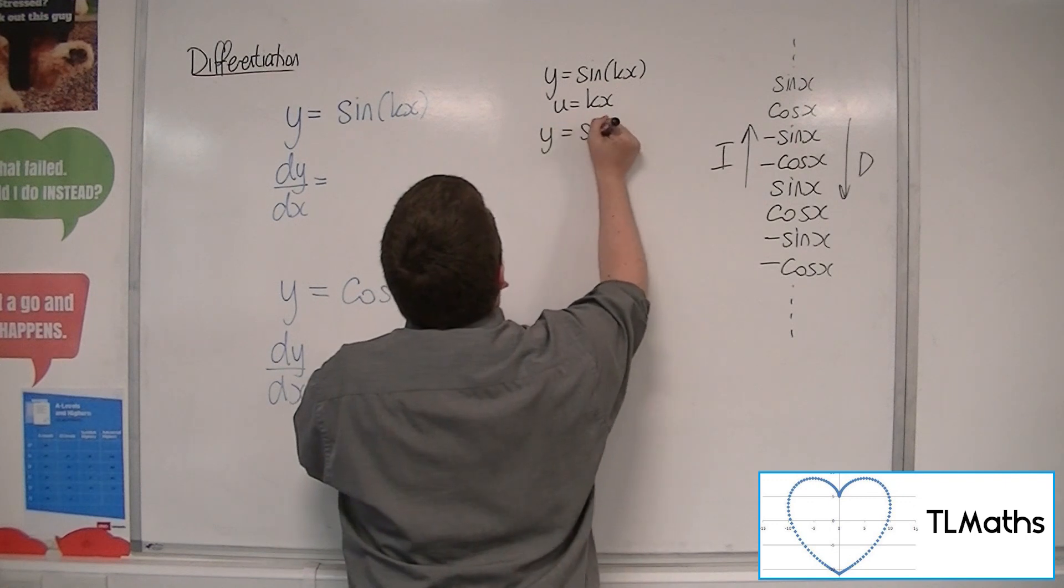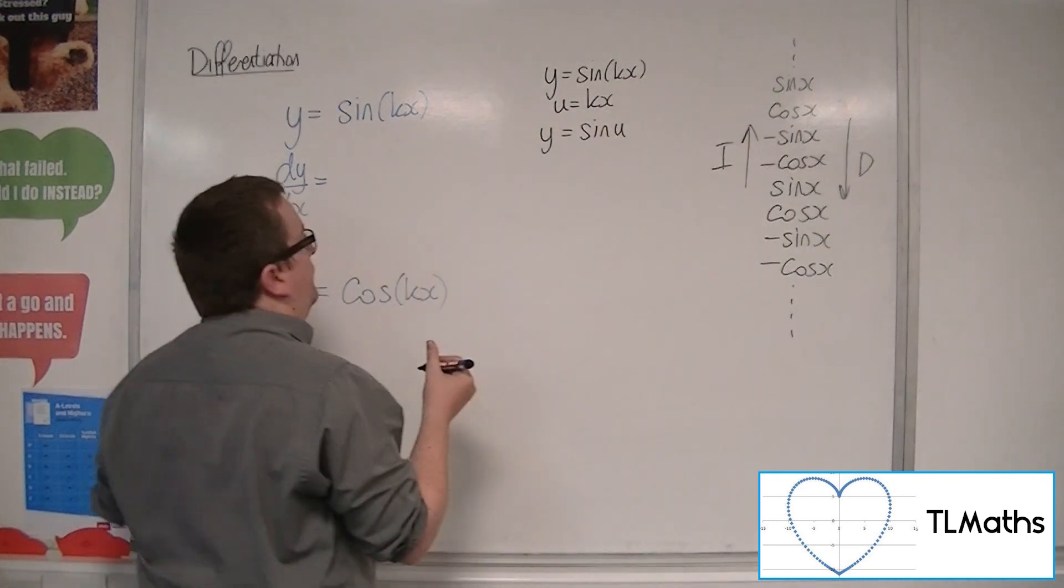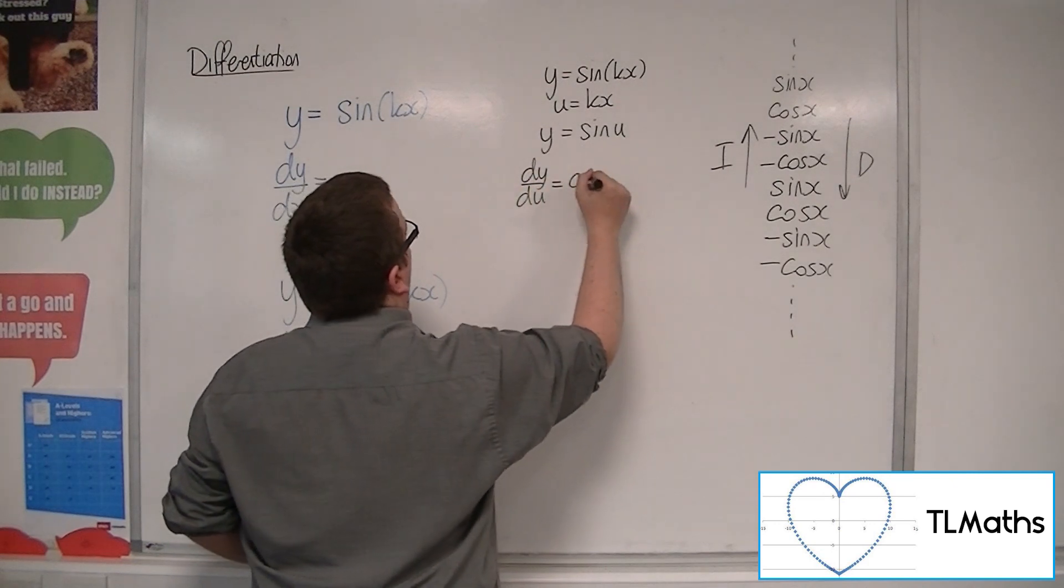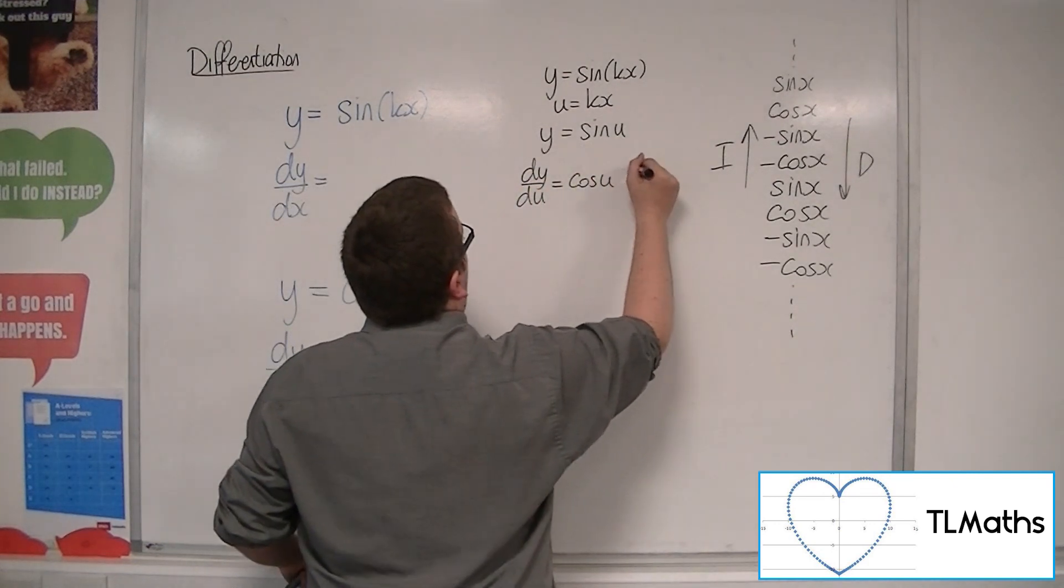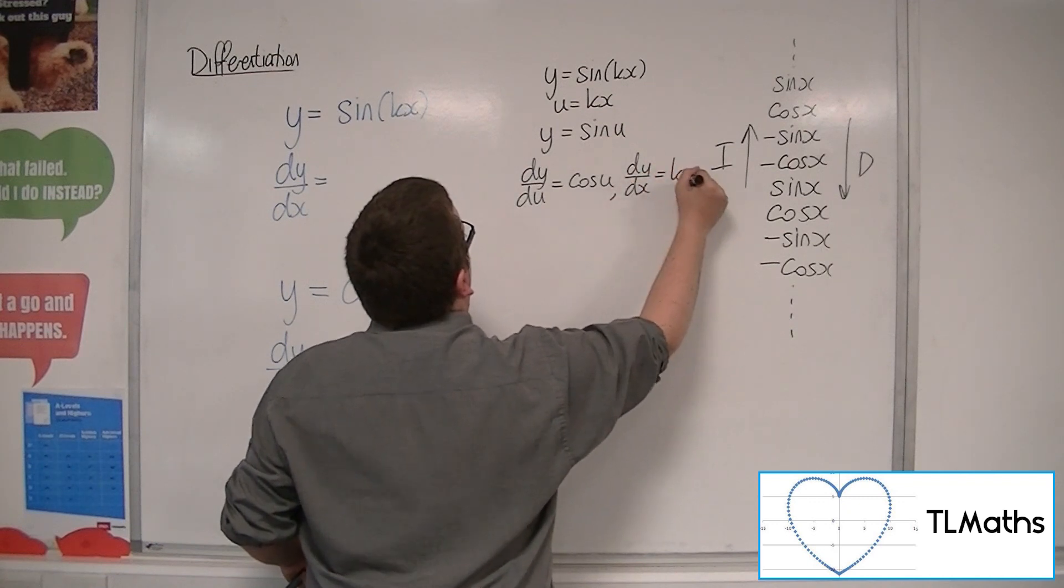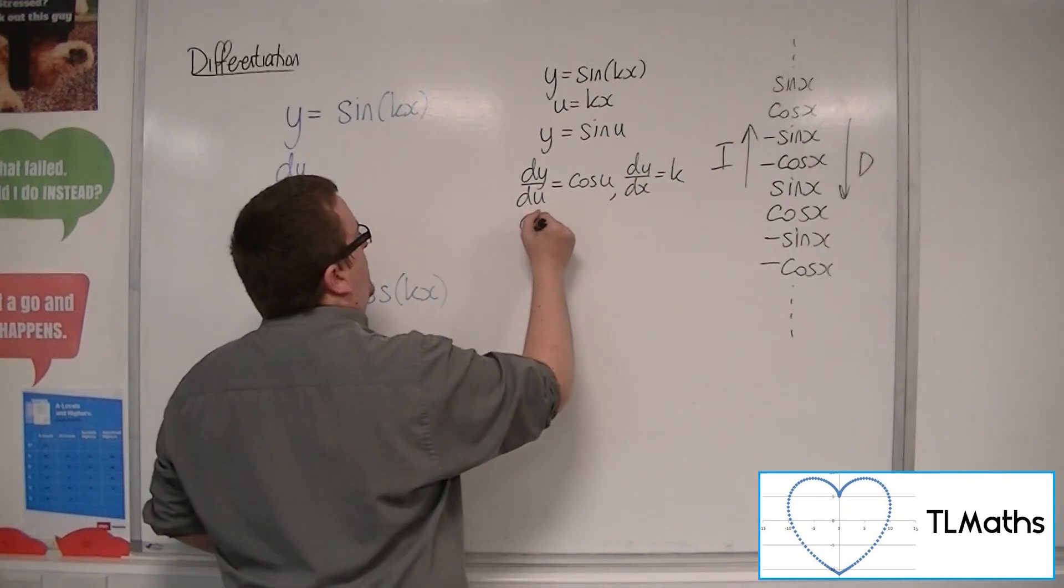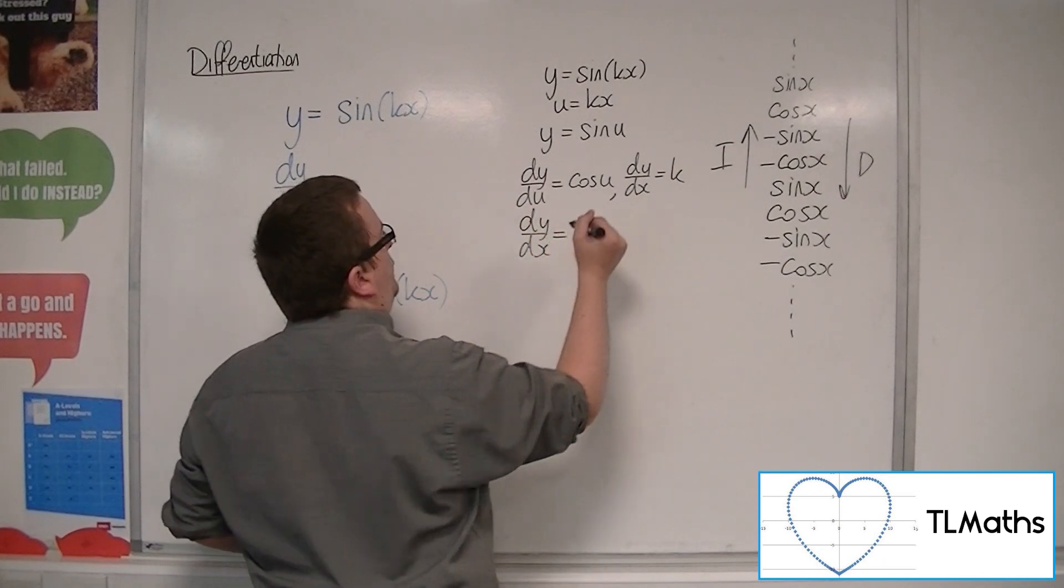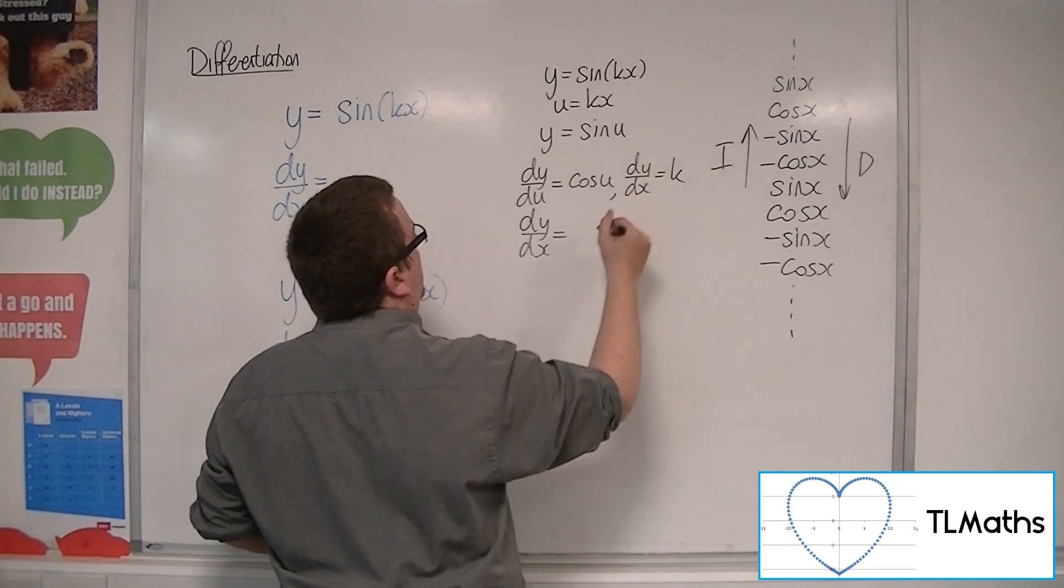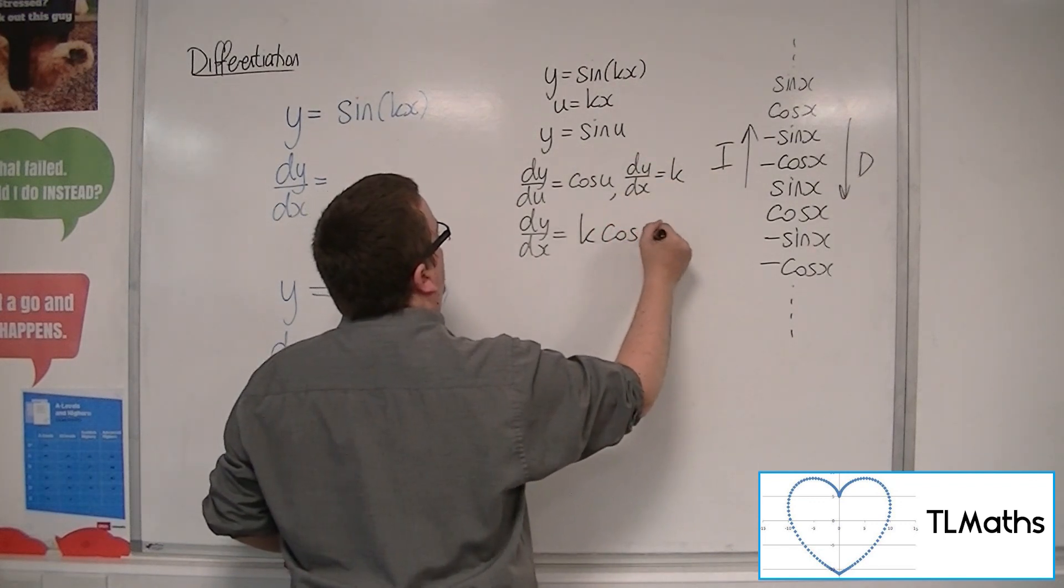So dy by du would be cosine of u. And du by dx would just be k. So dy by dx is equal to dy by du times du by dx. So k cosine of kx.